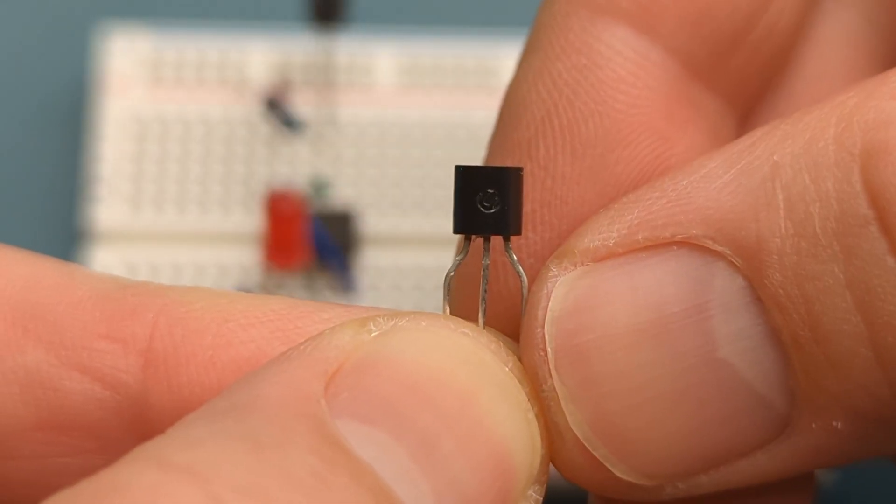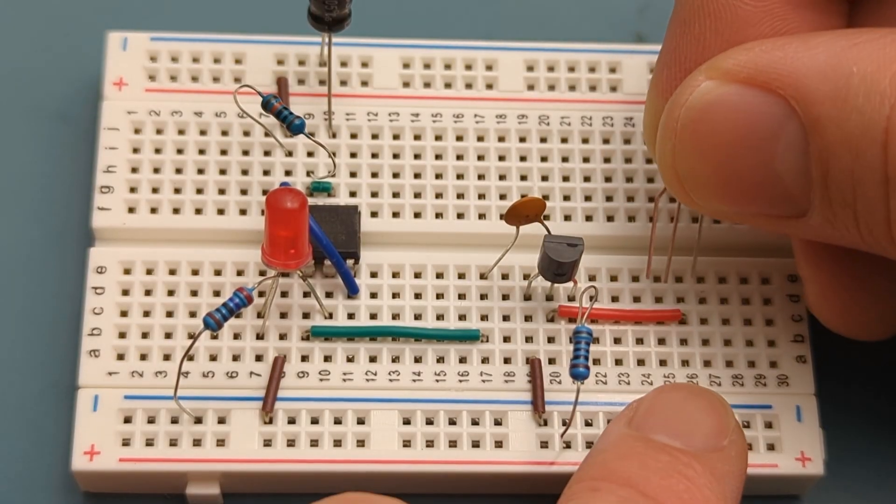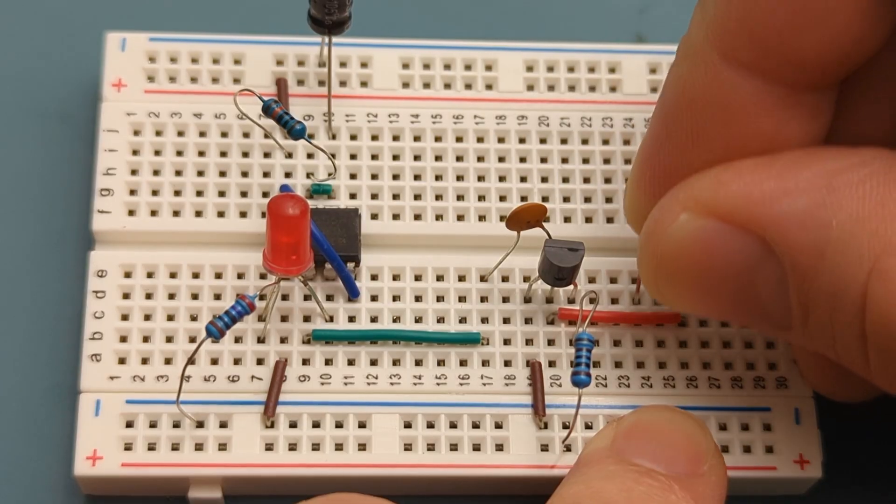Insert the BC547 above the red jumper wire. The collector is in the same row as the end of the jumper wire.